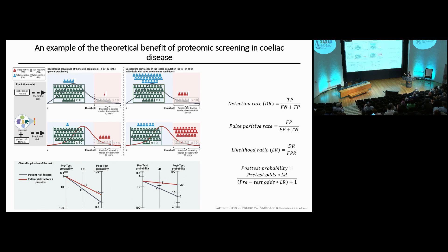As shown in the diagram, applying the test in a higher-risk population means that once we have a positive result, we are much more certain that the person will actually go on to develop celiac disease.